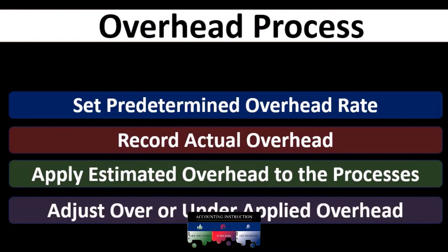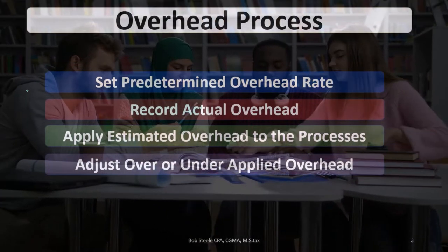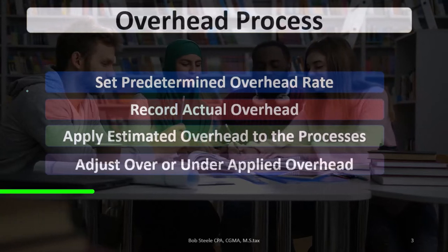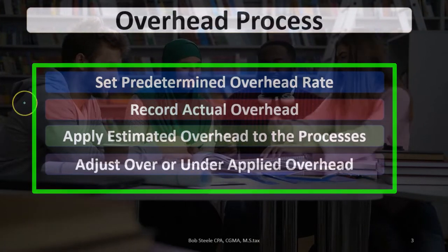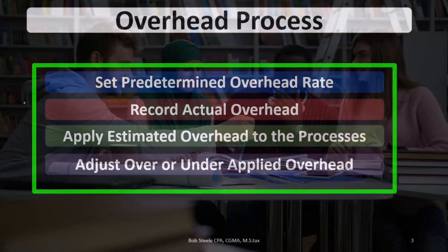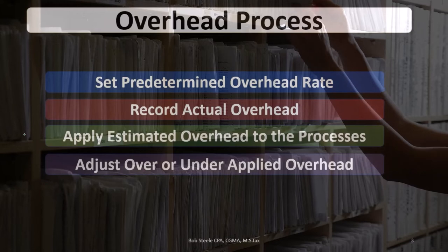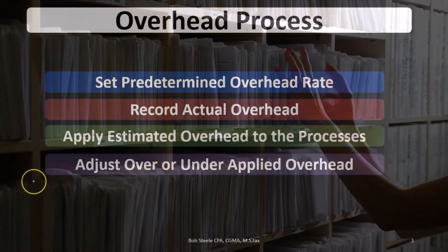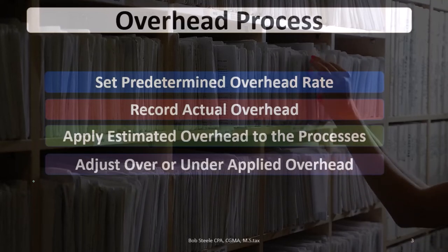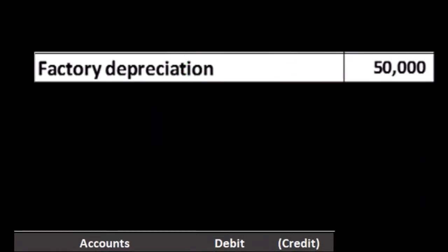So we set up the predetermined overhead rate to apply overhead to the appropriate department, record the actual overhead incurred during the time period, apply it to the proper department based on our predetermined overhead rate — which is an estimate — and then adjust for the over or under applied amount. Here we'll consider what kinds of things are included in factory overhead.